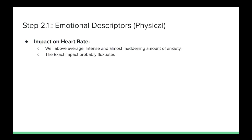Emotional Descriptors — Physical Experience. One: Impact on Heart Rate. The characters' heart rates are beating well above average. They are experiencing an intense and almost maddening amount of anxiety in the hours before the battle begins. The exact impact on their heart rate probably goes up and down over time as they wait and find ways to distract themselves. However, frequent false alarms result in unpleasant spikes of both their anxiety and heart rates.